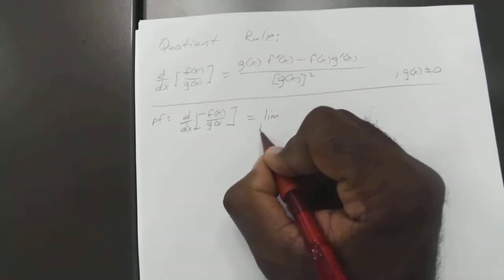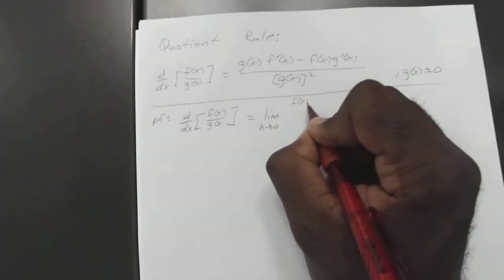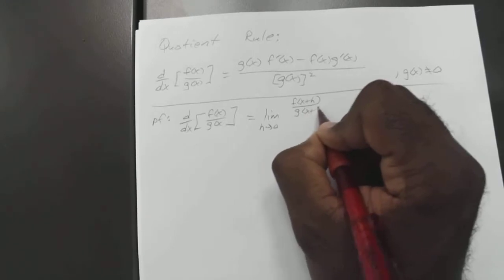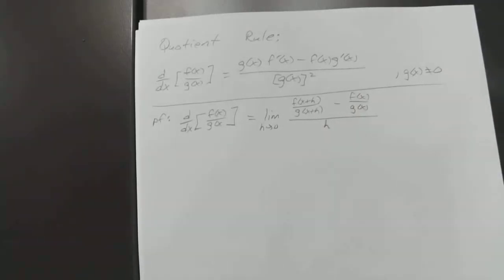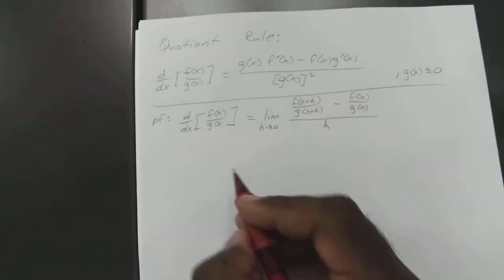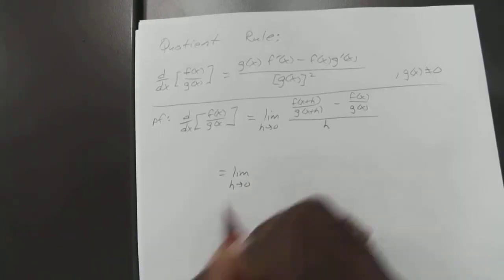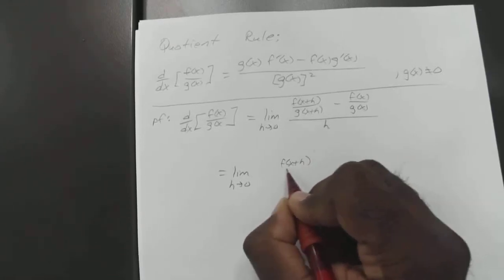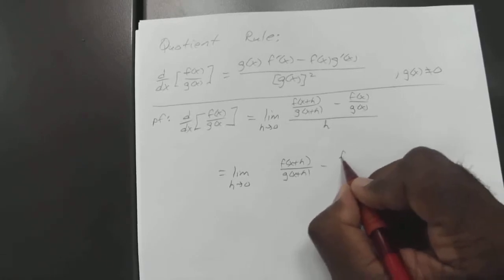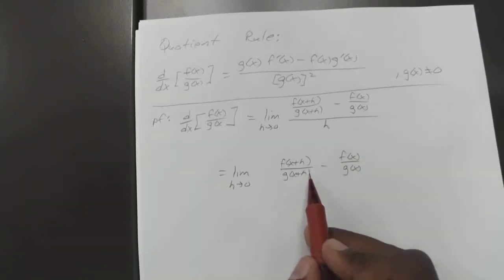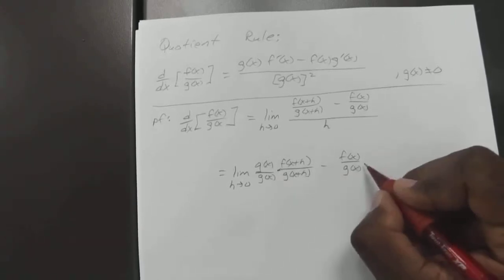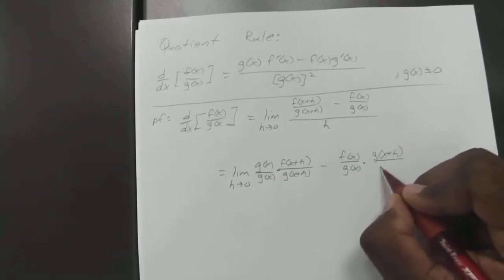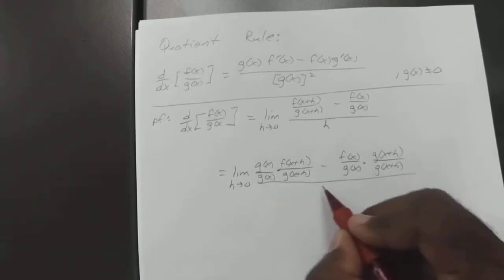We know that's going to equal the limit as h approaches zero of f of x plus h over g of x plus h, minus f of x over g of x, all over h. So we want to subtract these, but we need a common denominator. To get our common denominator, multiply the first by g of x over g of x, and the second by g of x plus h over g of x plus h, all over h.